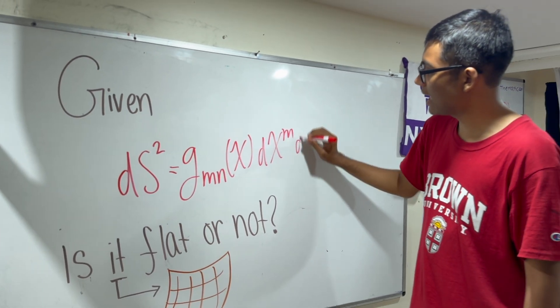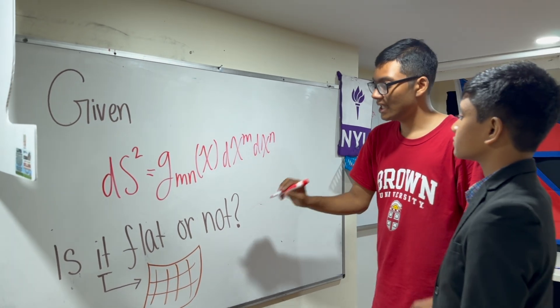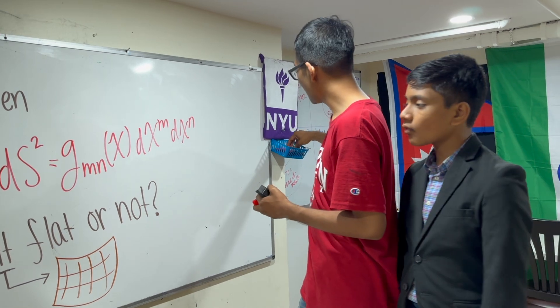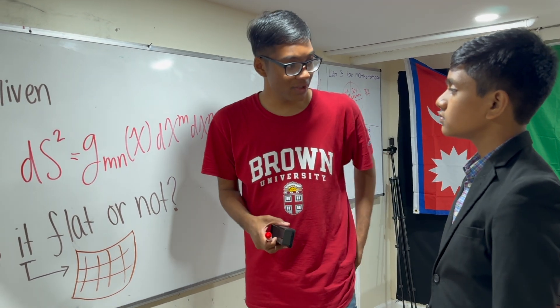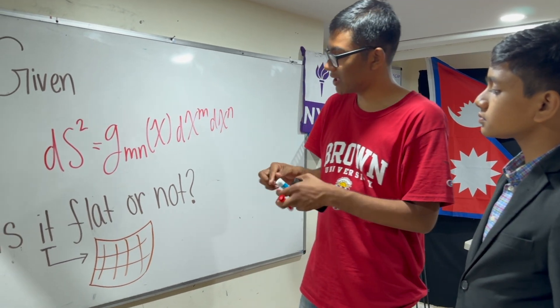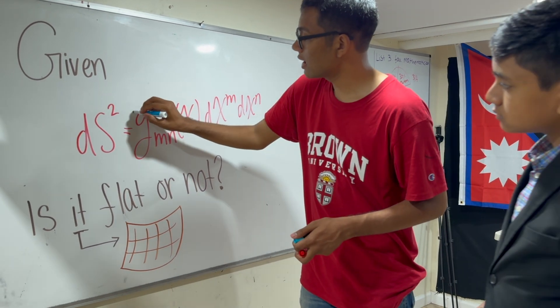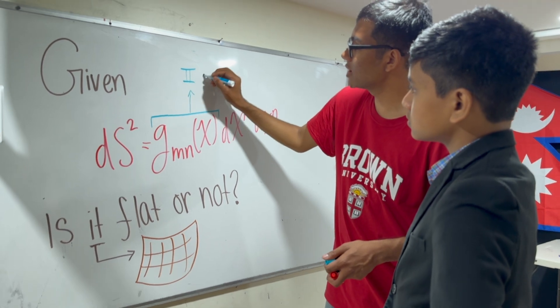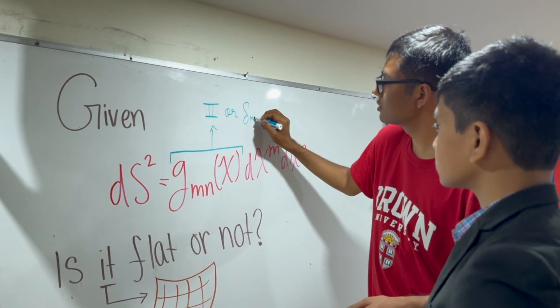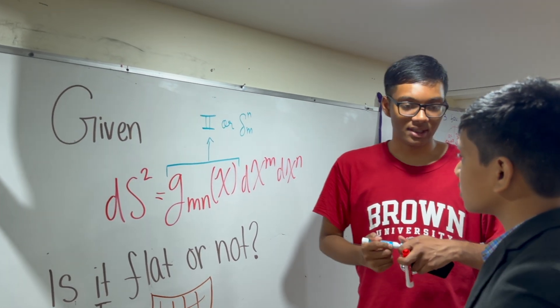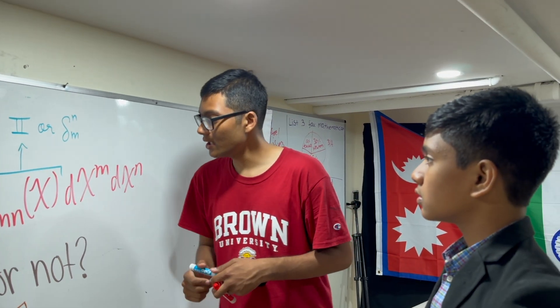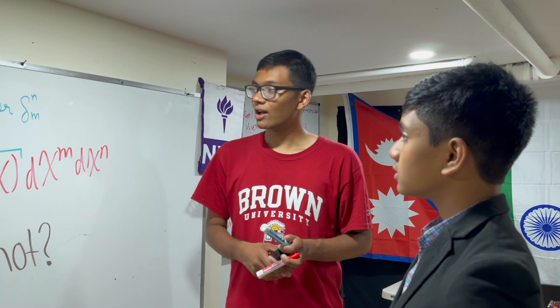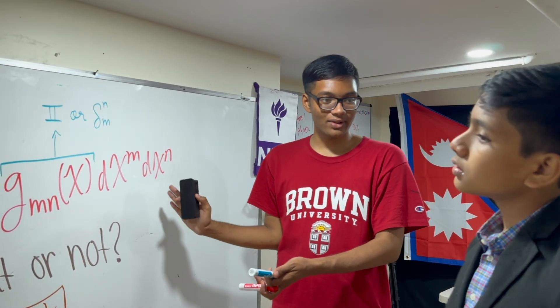Can I figure out if that surface is flat or not? In other words, can I find a transformation that takes the metric GMN and converts it into the identity matrix or the Kronecker delta, which are equivalent? That is the question we're trying to answer.